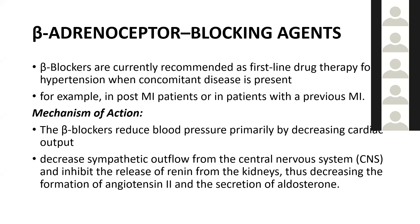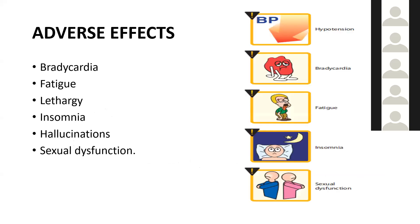Beta adrenoreceptor blocking agents are currently recommended as first-line drugs for hypertension with concomitant diseases, such as in post-MI patients. Their mechanism is to reduce blood pressure primarily by decreasing cardiac output, decreasing sympathetic outflow from the CNS, and inhibiting renin release from the kidneys, thereby decreasing formation of angiotensin 2 and secretion of aldosterone. Adverse effects include bradycardia, hypotension, fatigue, lethargy, insomnia, hallucinations, and sexual dysfunction.